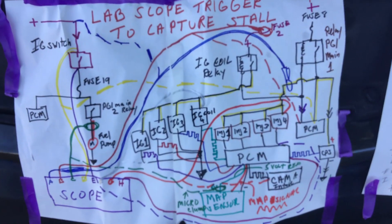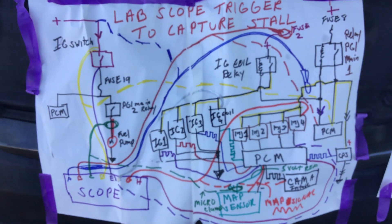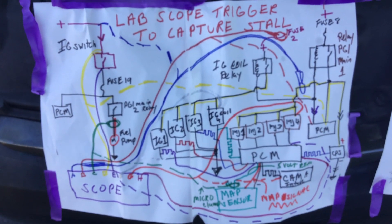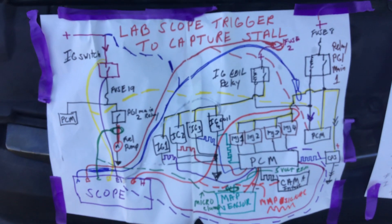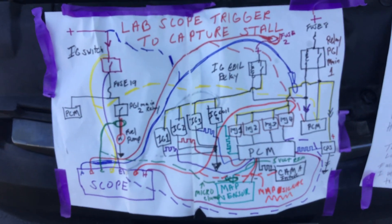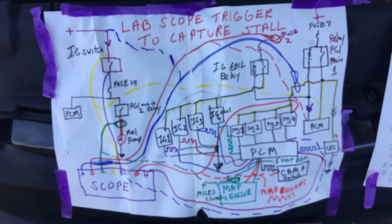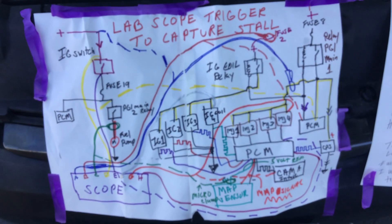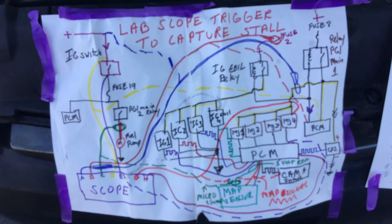Welcome. Today we're going to talk about lab scope triggering to capture a stall. First, take a screenshot of your schematic. The situation we're dealing with is a very abrupt and very infrequent stall, so we want to think about methodology. The first thing is we never forget the underlying symptom — this is an abrupt stall that is very infrequent. We're going to use the trigger method, which is set up so that when we trigger on a signal and that signal goes away when the car stalls, the scope stops capturing its waveform.